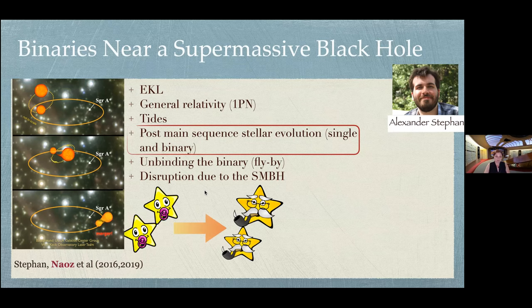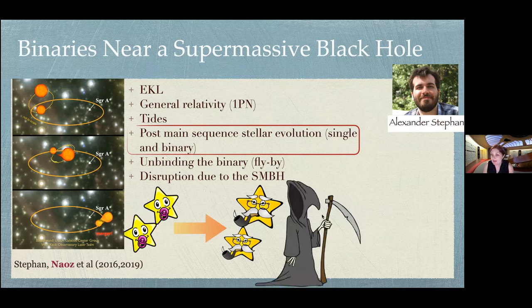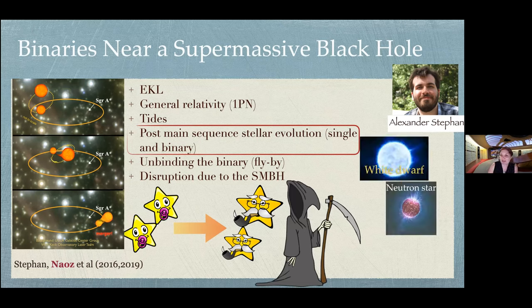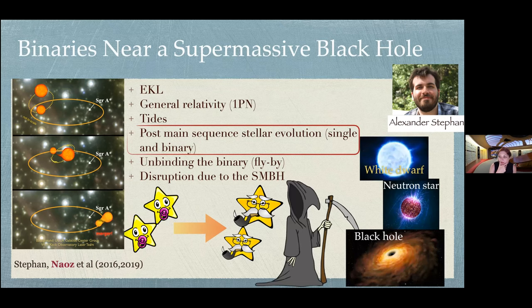We also included unbinding the binary from neighboring interactions, and the Hills mechanism — if the binary comes too close to the supermassive black hole it breaks apart. In general, this allows us to follow stars from birth to old age all the way to death. We found many different systems: black holes, neutron stars, and white dwarfs.